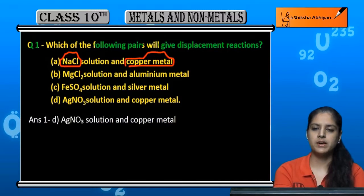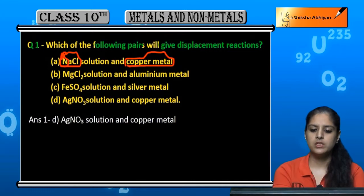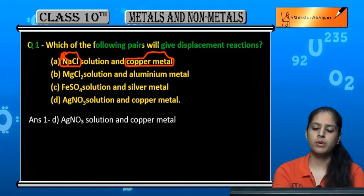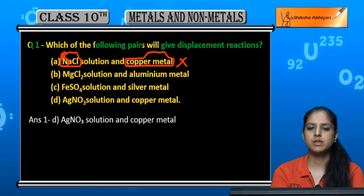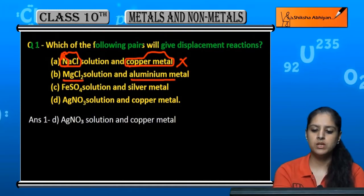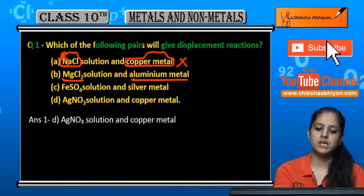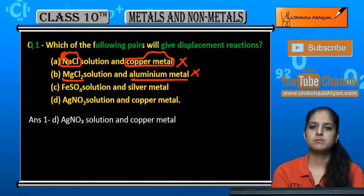First, NaCl solution and copper metal — in this case the metal is sodium and copper. Copper metal is less reactive than sodium metal, so it will not displace and will not give a displacement reaction. Then MgCl₂ and Aluminium metal — Aluminium is less reactive than Magnesium, so this will also not give a displacement reaction.